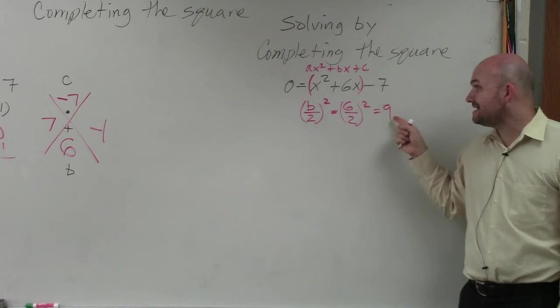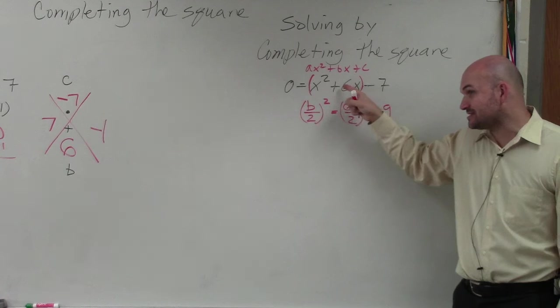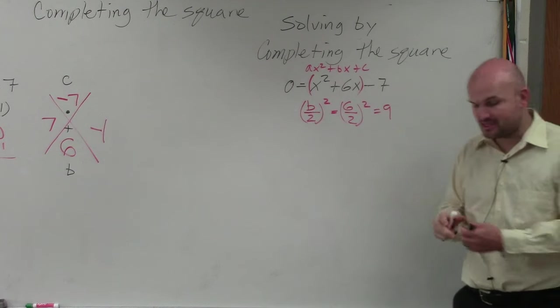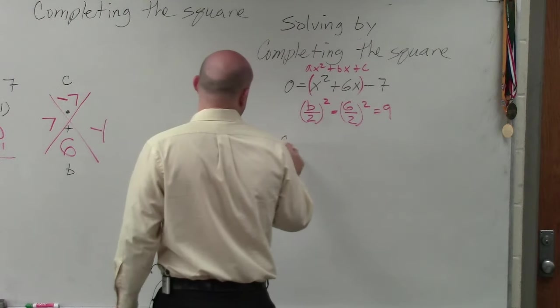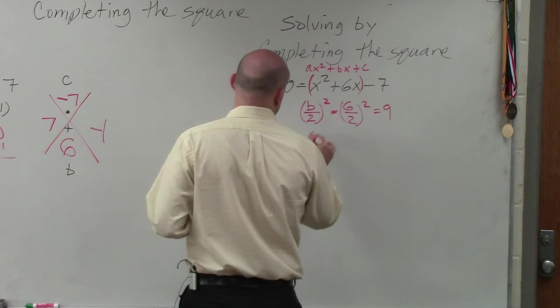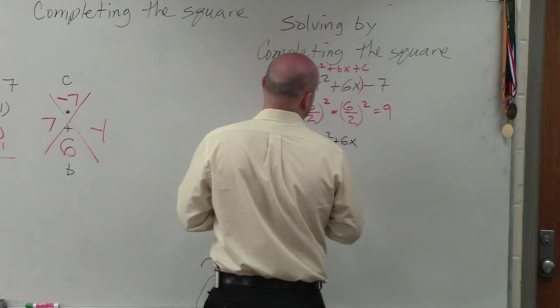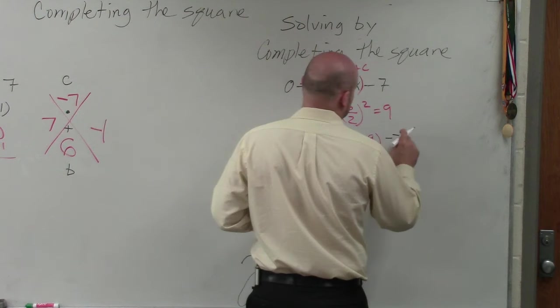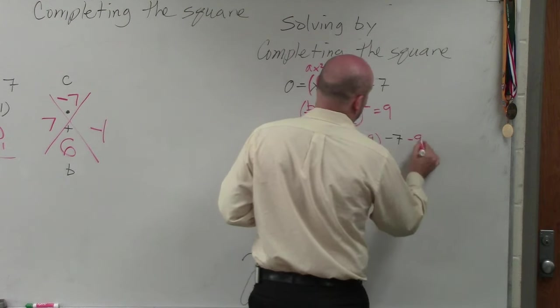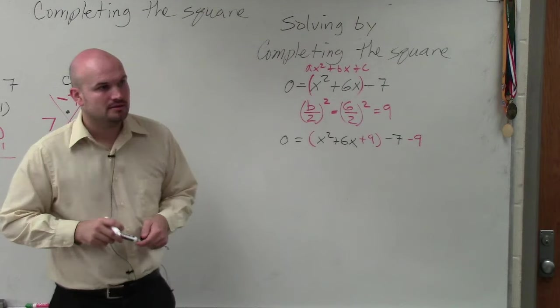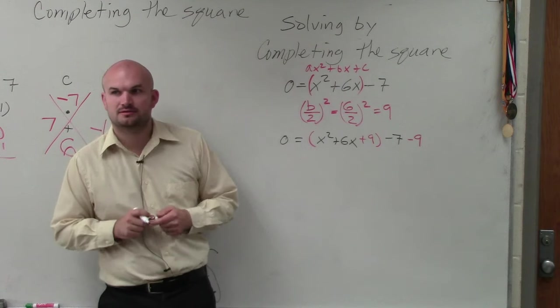Then what we do is we take that 9, add it inside the parentheses, and then subtract it outside the parentheses. So we have 0 equals x squared plus 6x plus 9 minus 7 minus 9. Does everybody see that? OK.